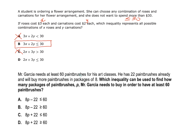Mr. Garcia needs at least 60 paintbrushes for his art classes. He has 22 paintbrushes already and will buy more in packages of 8. Which inequality can be used to find how many packages P Mr. Garcia needs to buy to have at least 60 paintbrushes? At least means greater than or equals to 60. Eliminating A and C for having less than or equals, and noting that he already has 22 and will buy more — more indicates addition — giving 8P + 22 ≥ 60. The answer is D.